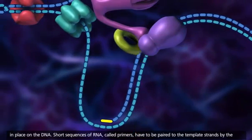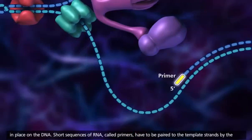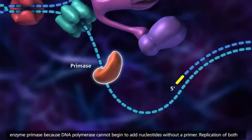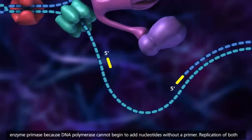Short sequences of RNA, called primers, have to be paired to the template strands by the enzyme primase, because DNA polymerase cannot begin to add nucleotides without a primer.